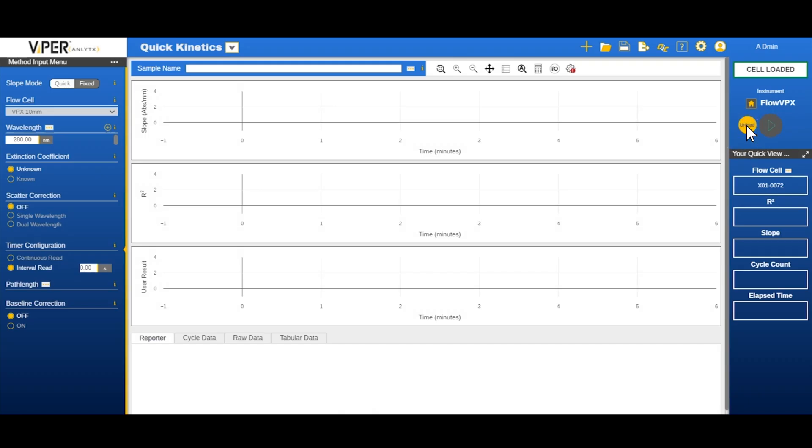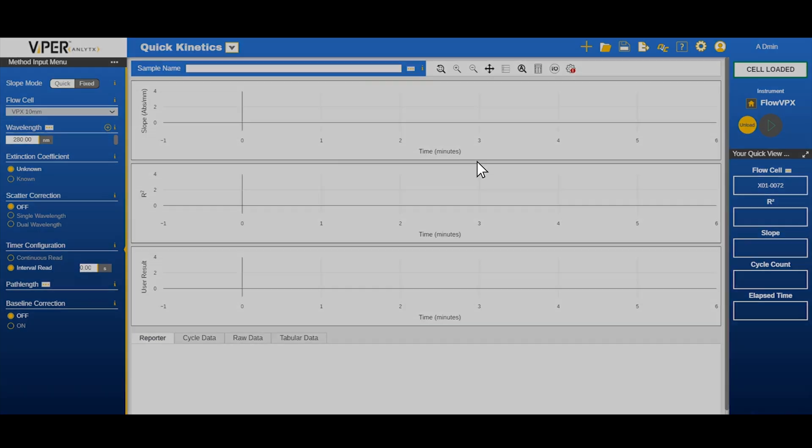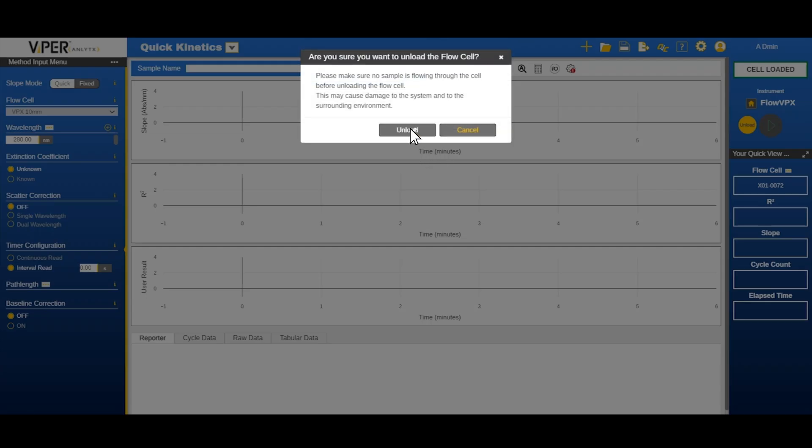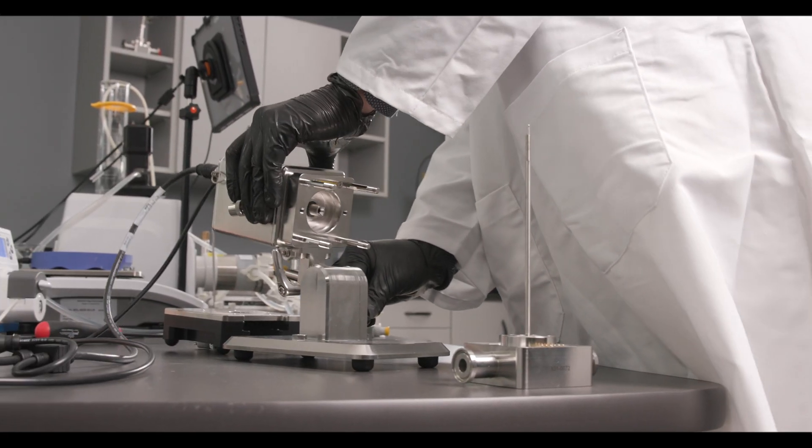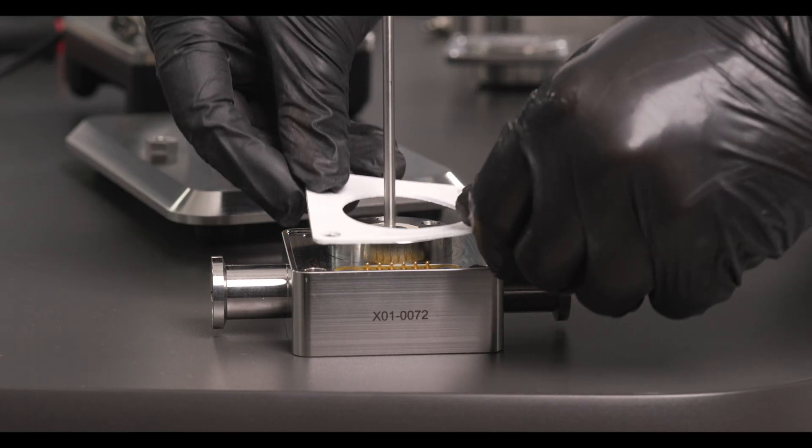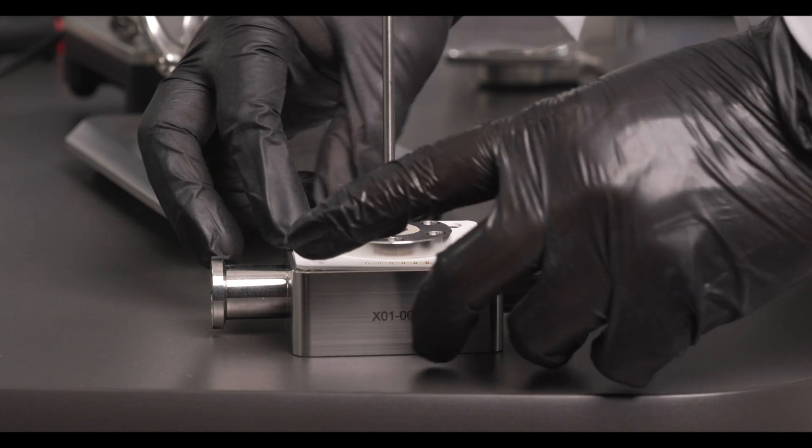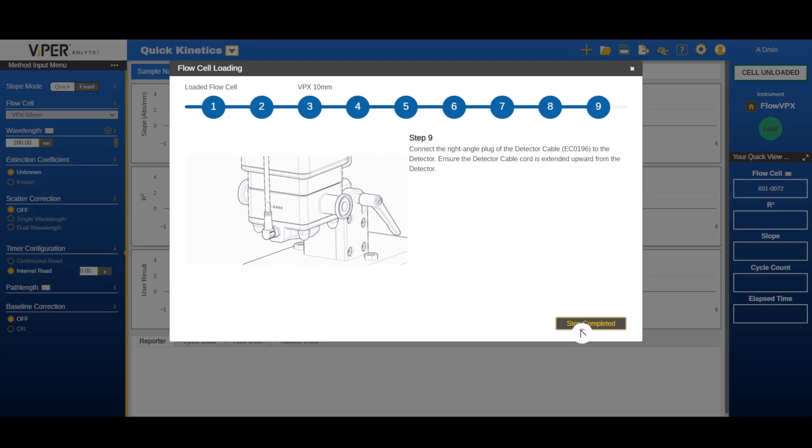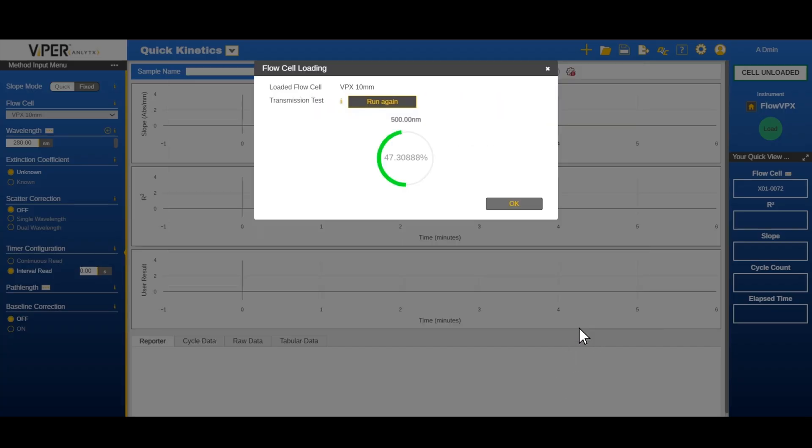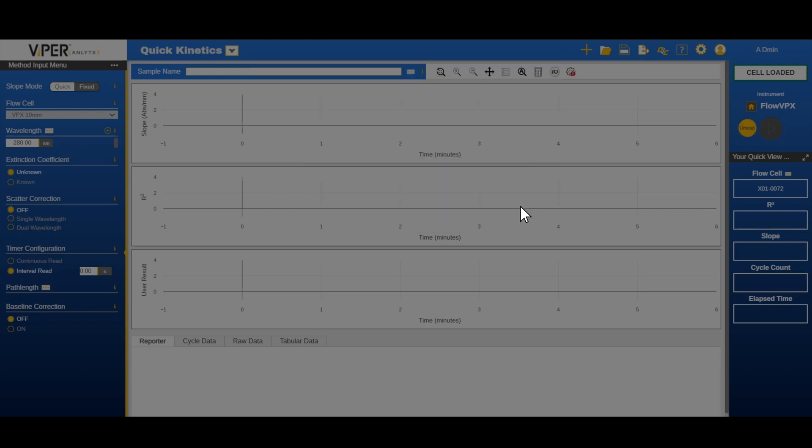If you are changing or disposing the current flow cell, begin the unloading procedure. For more complete instructions, consult the hardware manual or watch our video about loading and unloading the flow cell. Once the flow cell is unloaded, VIPER will automatically run a transmission check the next time you load a new flow cell.